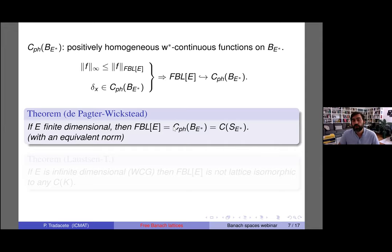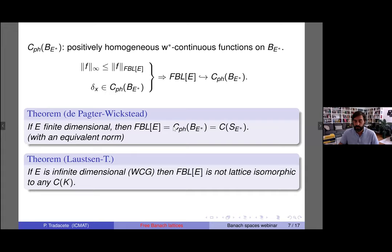The equivalence constant in the finite-dimensional case depends on dimension. In work in progress with Niels Laustsen, we actually proved that this cannot happen for an infinite-dimensional Banach space — if you start with a weakly compactly generated or separable space, the free Banach lattice is not lattice isomorphic to any space of continuous functions on a compact Hausdorff space.